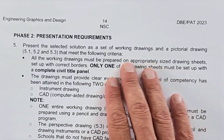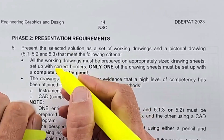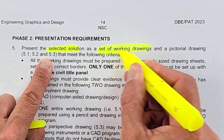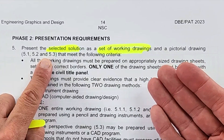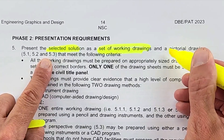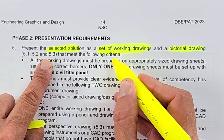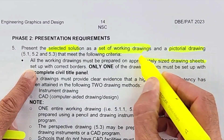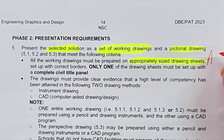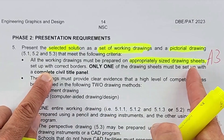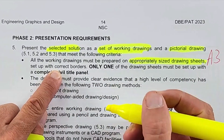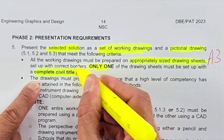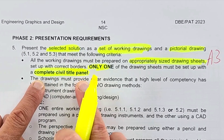There's really not a lot that they say in the actual document — it's on page 14. It requires you to present the selected solution in a set of working drawings, which refers to the layout plan, floor plan, elevations, section elevations, and a pictorial drawing which will be your two-point perspective. All working drawings must be prepared on appropriately sized drawing sheets — that is A3, please — set up with correct borders. Only one of these must be set up with a complete civil title panel.